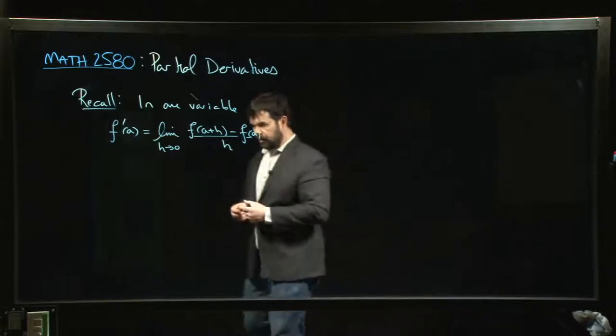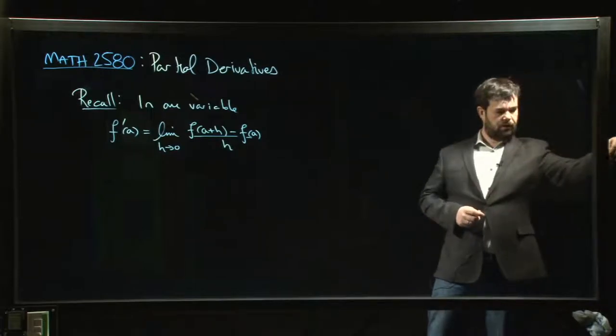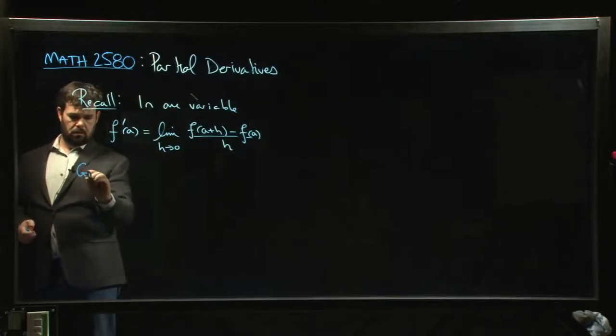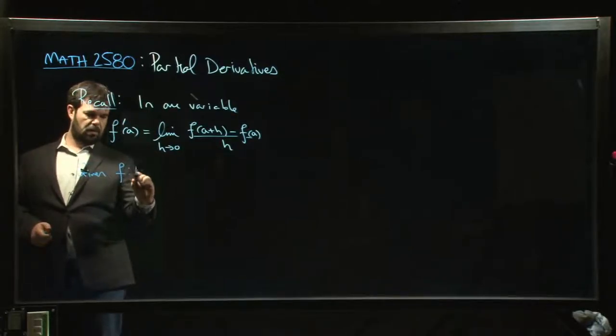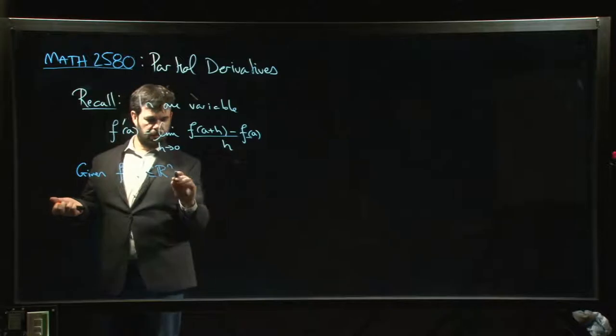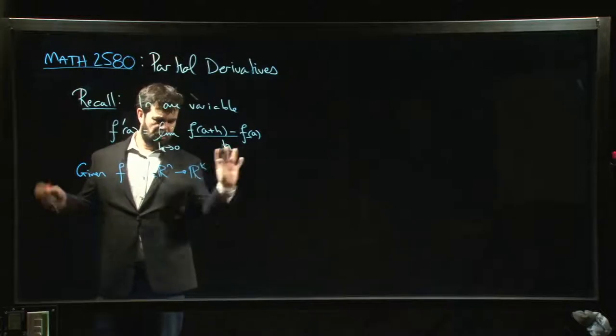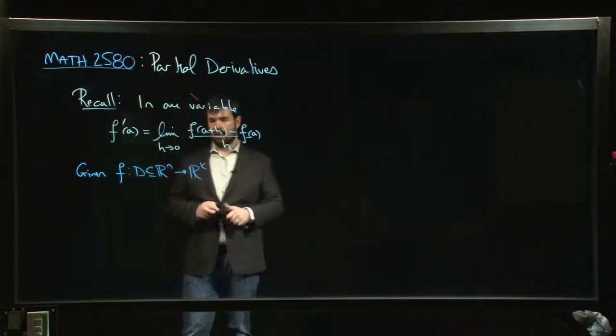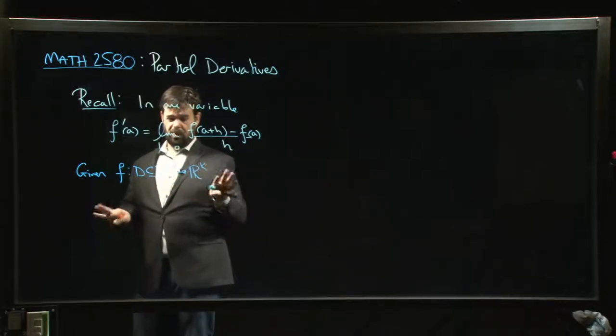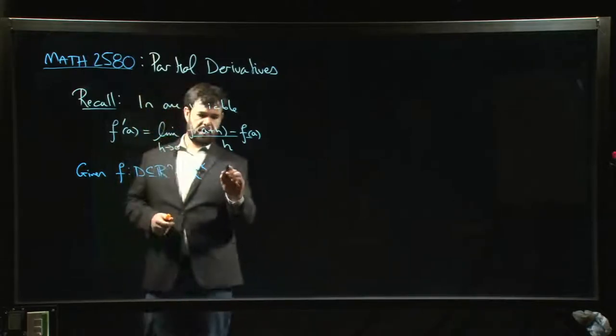All right, so we have this idea of what derivatives look like in one variable. So then your first temptation, if somebody gives you a function of more than one variable, let's say somebody gives you a function f with some domain D and R^n, so it's a function of several variables. And you know, maybe even just to make life interesting, we take it to be a vector valued function, but you can stick to real valued here. It's the dimension of the domain that's significant here more so than the dimension of the co-domain.